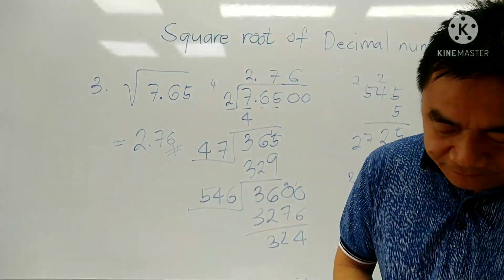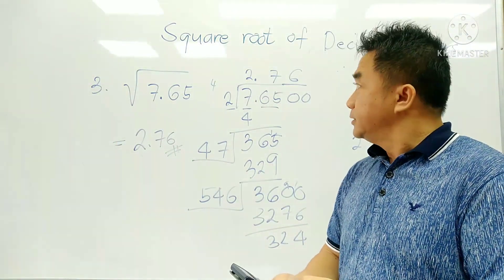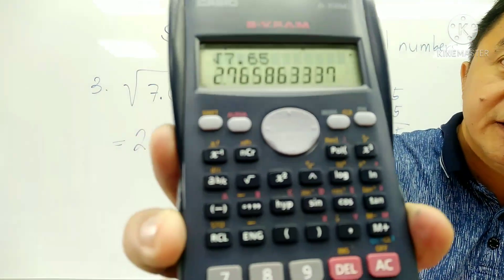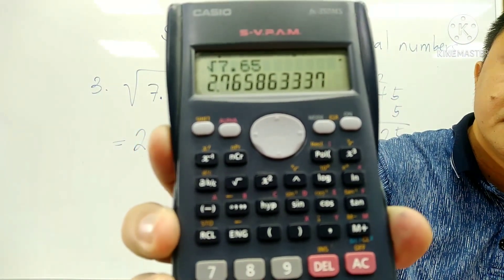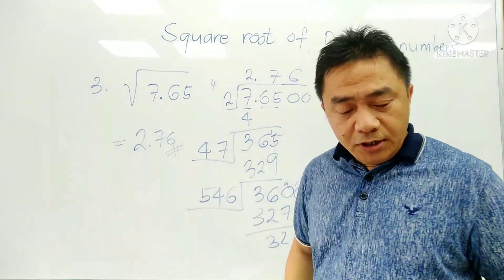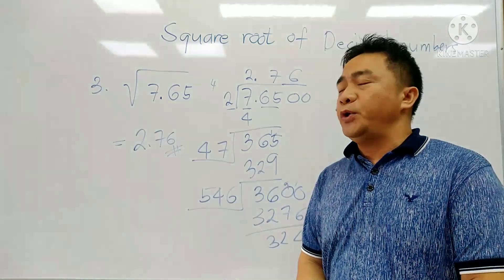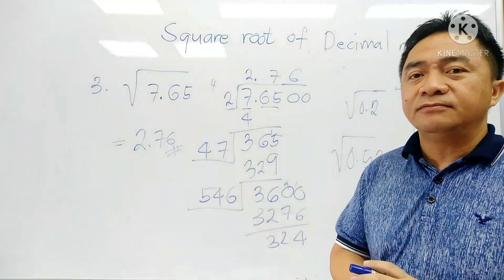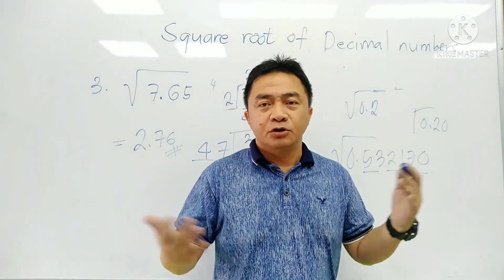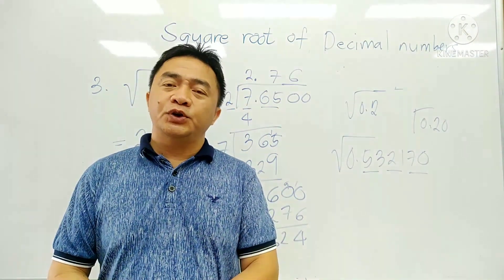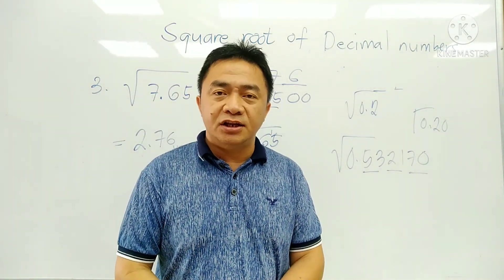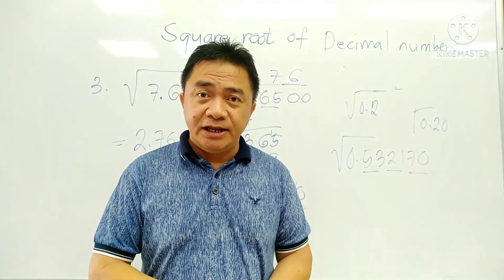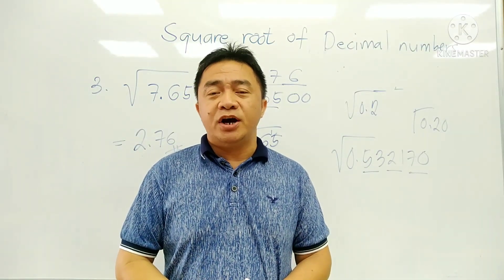We're going to check whether our answer is correct using our calculator. The square root of 7.65 is 2.76 — you see? So it's clear. That's the method on how we can get the square root of a decimal number. I hope that you understand in getting the square root of decimal numbers. That's all for today and we'll see you again next time.